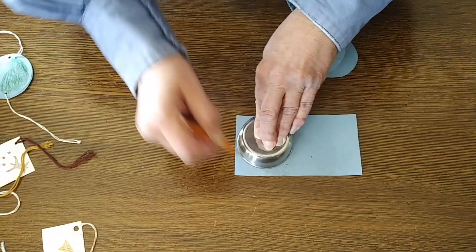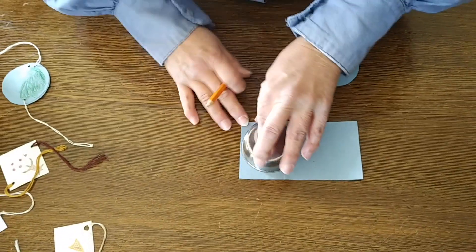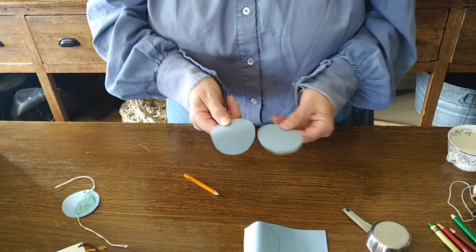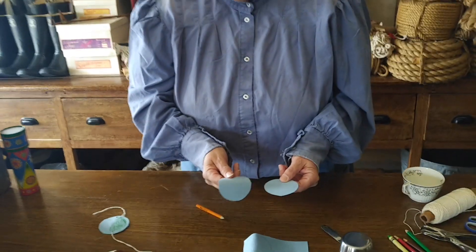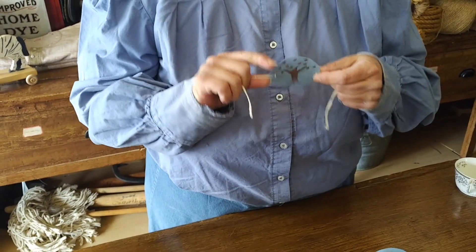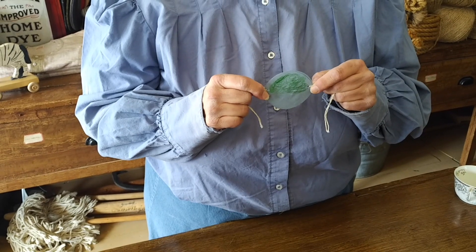And then I'm going to cut out my circle. I need two of them. Because then I need to think about the picture I want to draw. The whole idea is that one side has part of the picture, and the other side has the other part of the picture.